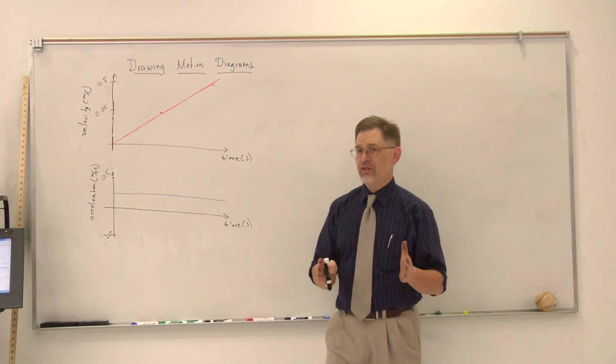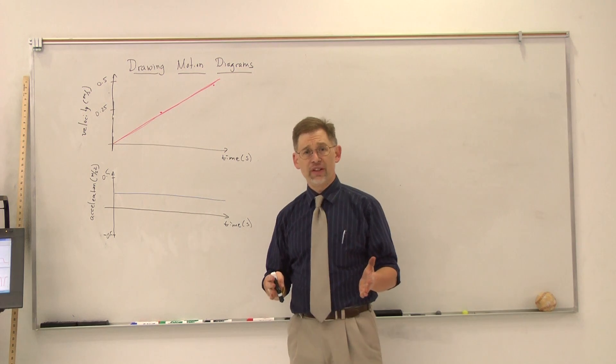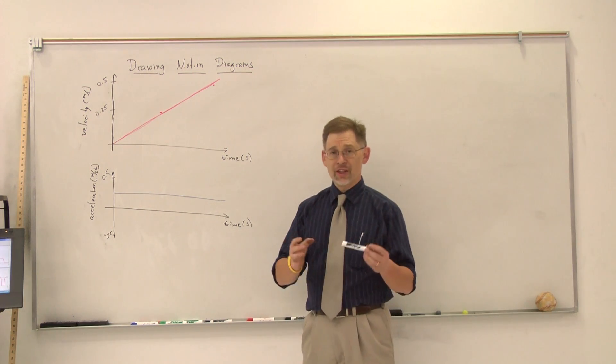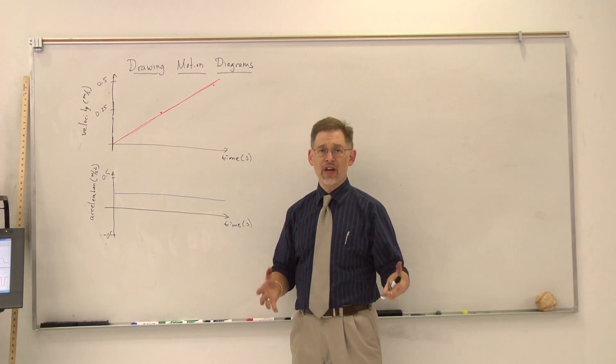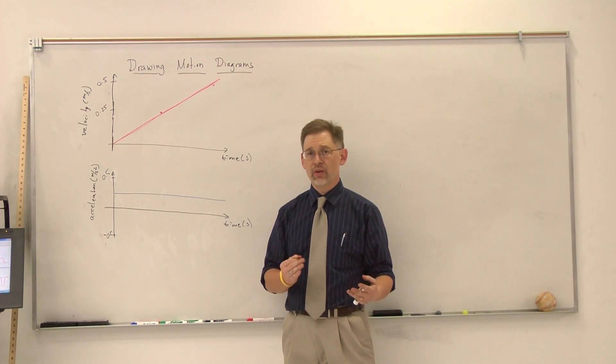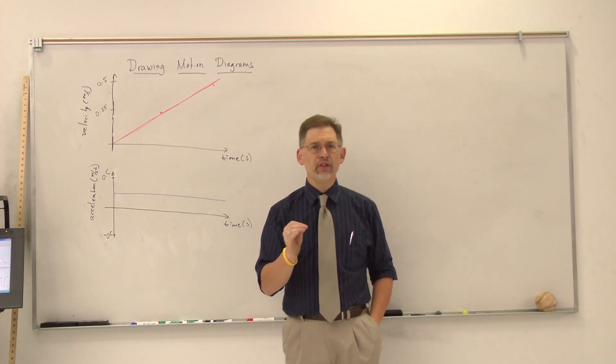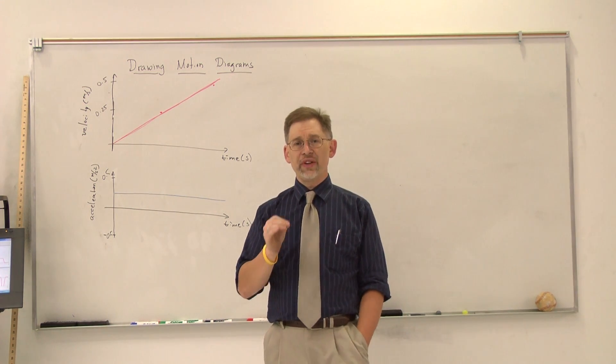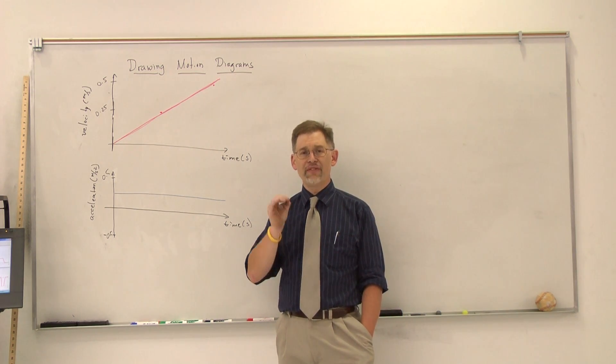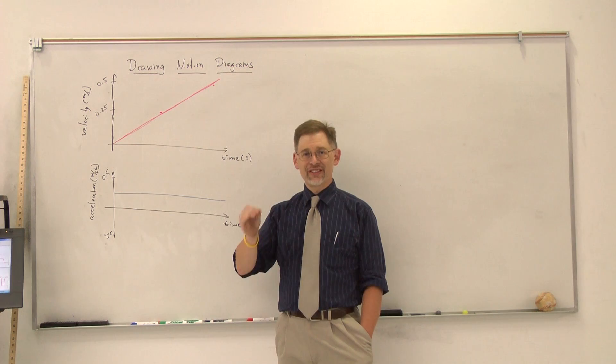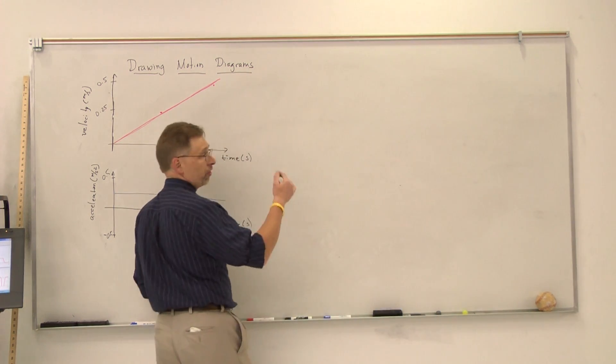The coolest way to do this that I've seen is something called a motion diagram. This was developed by Alan Van Heuven at The Ohio State University, and it's something that he put together to help you see how all three of these things are separate and yet still related to each other. A motion diagram is drawn in a specific way. What we want to do first is represent the positions of the object at successive instances of time.